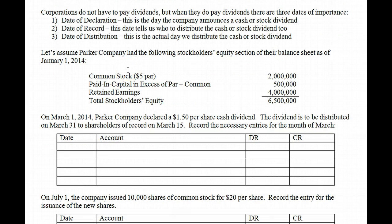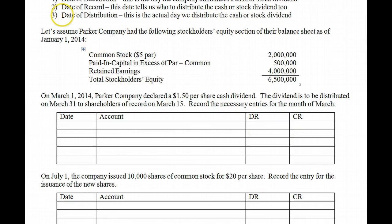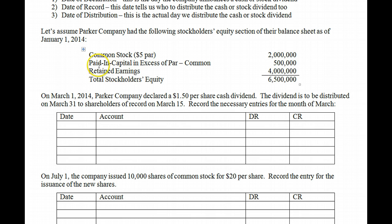Let's look at an example. Parker Company had the following stockholders' equity section on January 1, 2014: Common Stock at $5 par — $2 million; Paid-in Capital in Excess of Par — $500,000; Retained Earnings — $4 million; for total stockholders' equity of $6,500,000.